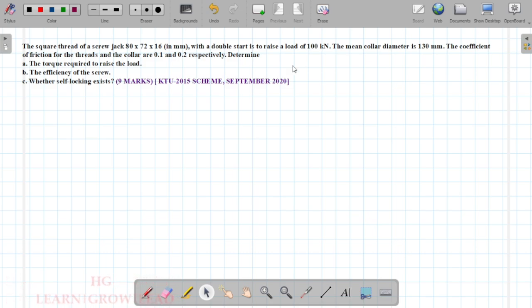The square thread of a screw jack is 80 by 72 by 16 in mm with a double start is to raise a load of 100 kN. The mean collar diameter is 130 mm. The coefficients of friction for the threads and the collar are 0.1 and 0.2 respectively. Determine the torque required to raise the load, the efficiency of the screw, and whether self-locking exists.